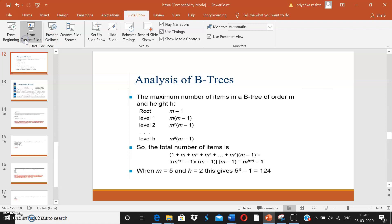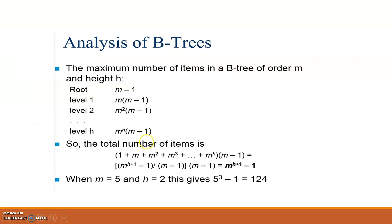We discussed the total number of items that can be stored in a B-tree. If you get a question that it is a five-way B-tree and the height is 2, how many elements can it store? It can store m to the power h+1 minus 1 elements — that is 5 cubed minus 1, which is 124 elements.